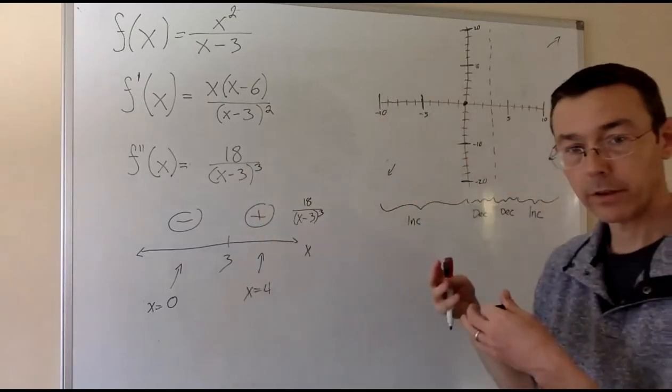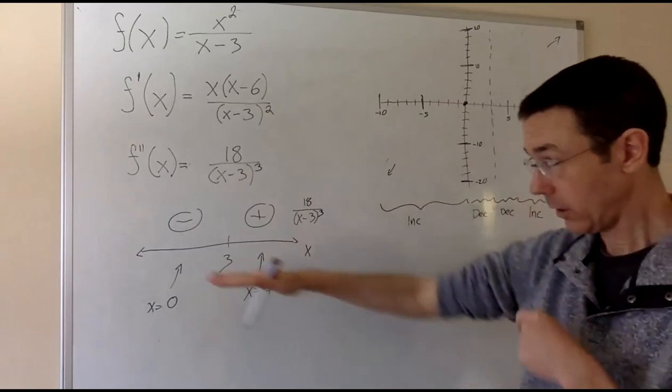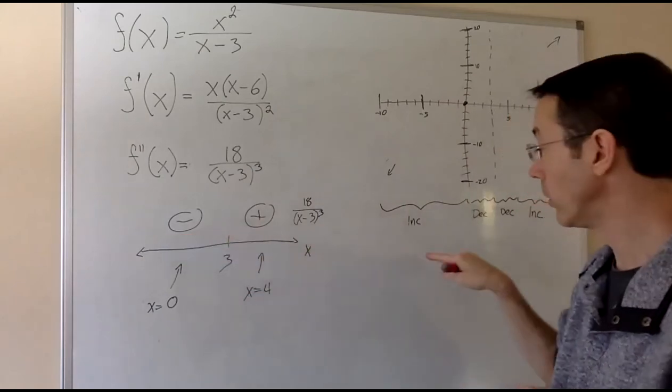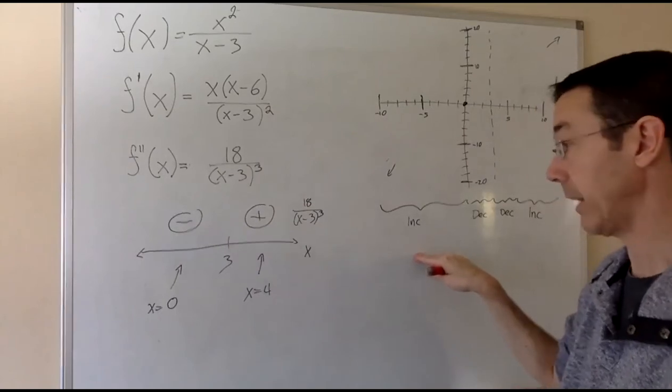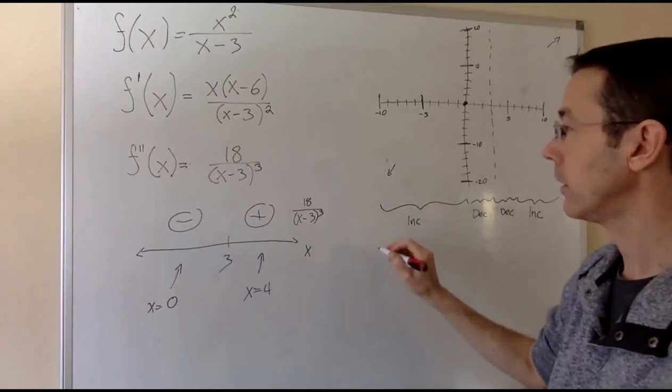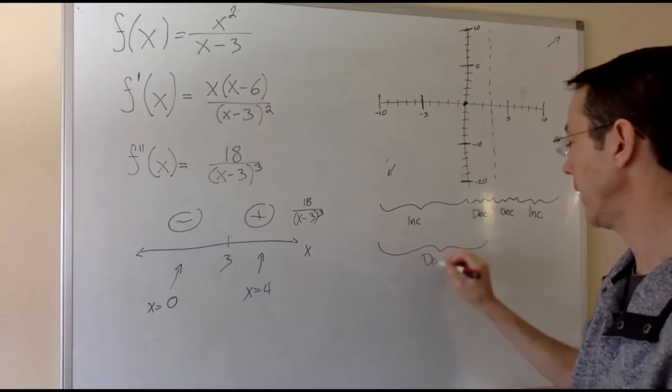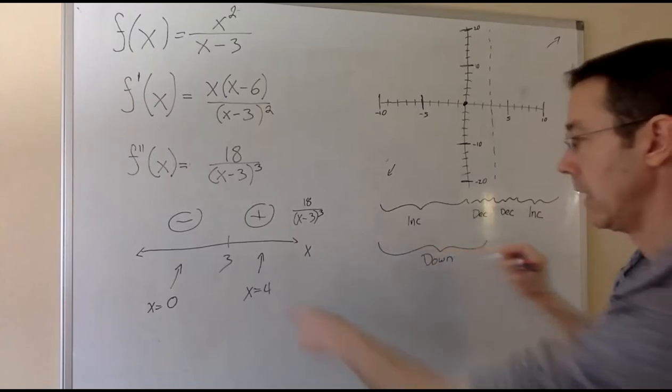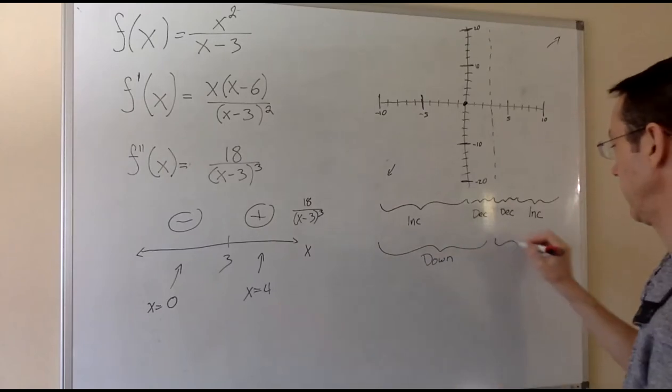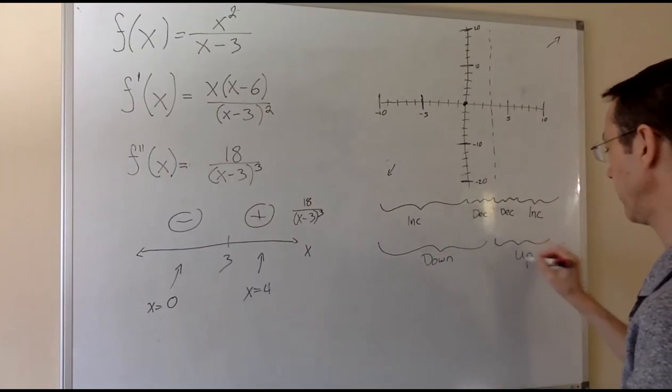Coming back over to the in progress sketch, wherever we see a minus for the second derivative, we're noting that the graph is going to be concave down. So from negative infinity to 3, it's concave down. And from 3 on, it's concave up.